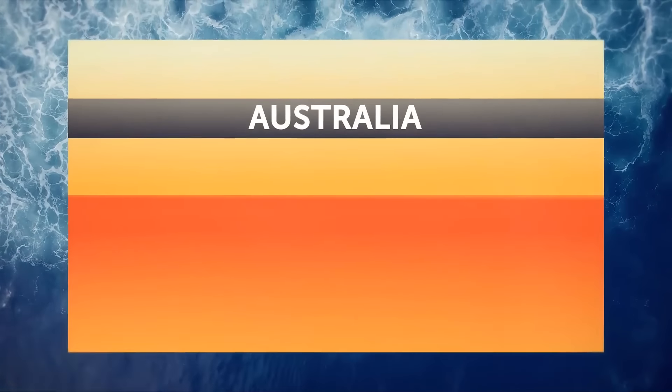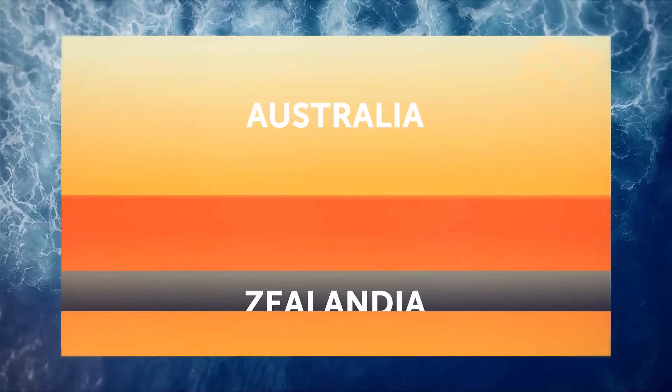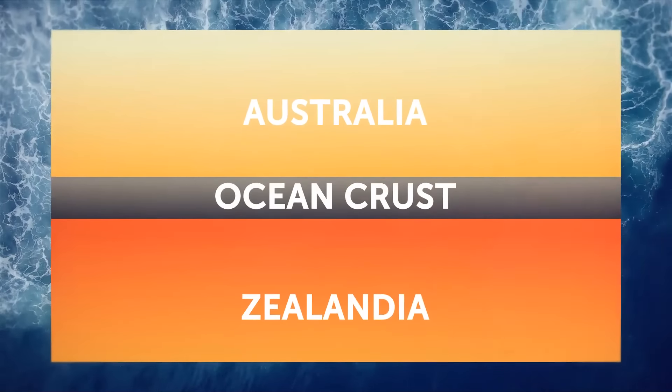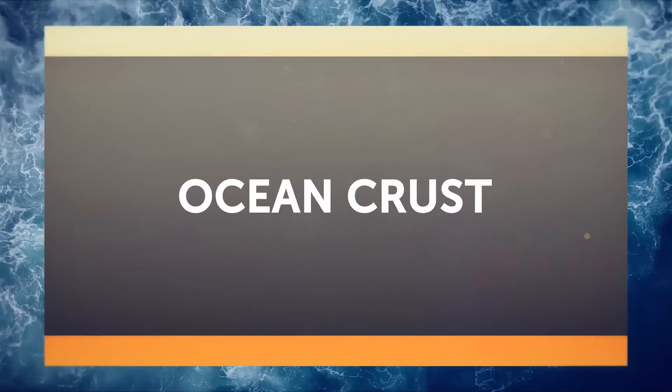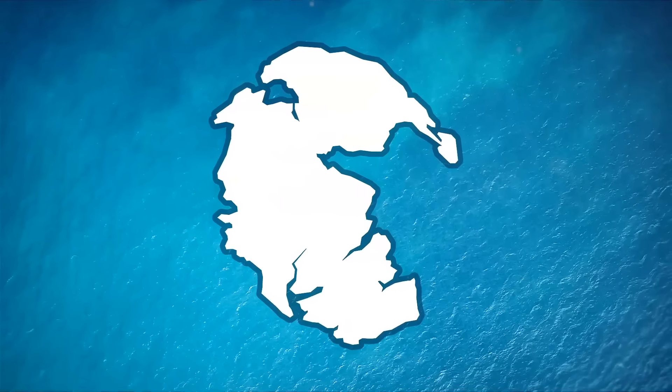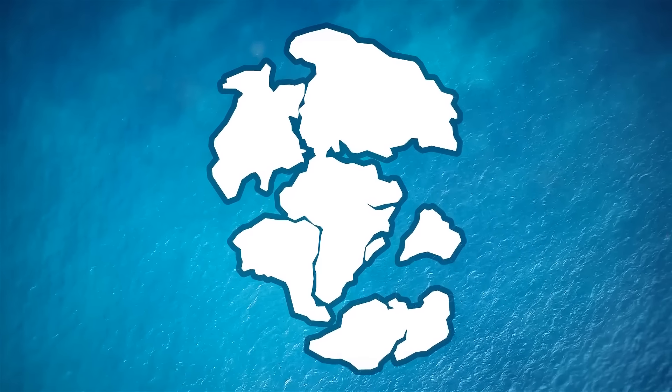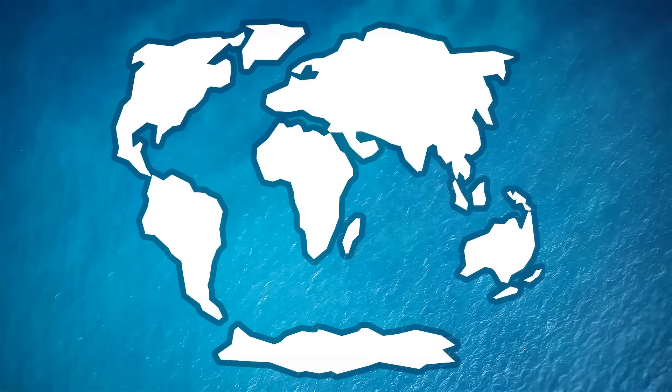Finally, scientists have discovered a narrow strip of oceanic crust that separates Australia from the hidden land of Zealandia. It means these two are separate continents. 85 million years ago, Zealandia decided to break free from the supercontinent Gondwana.